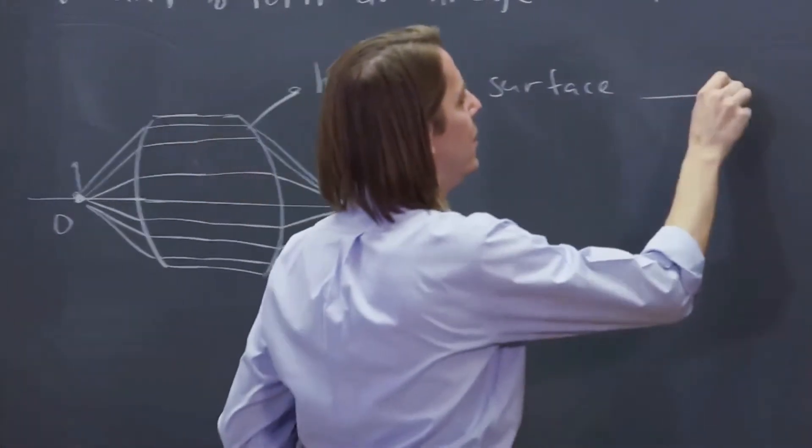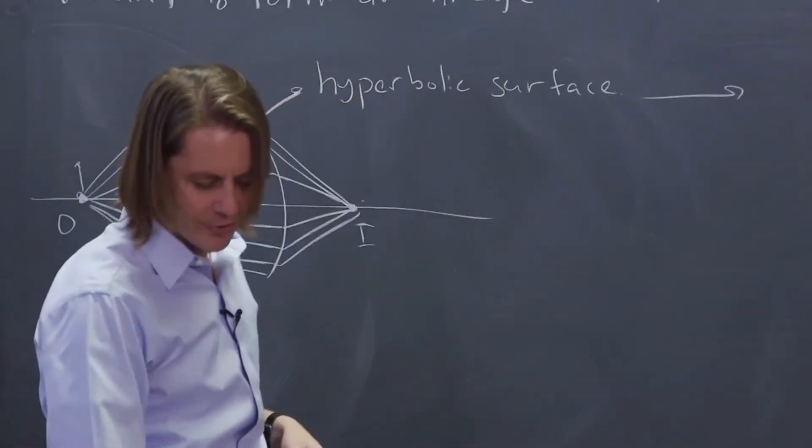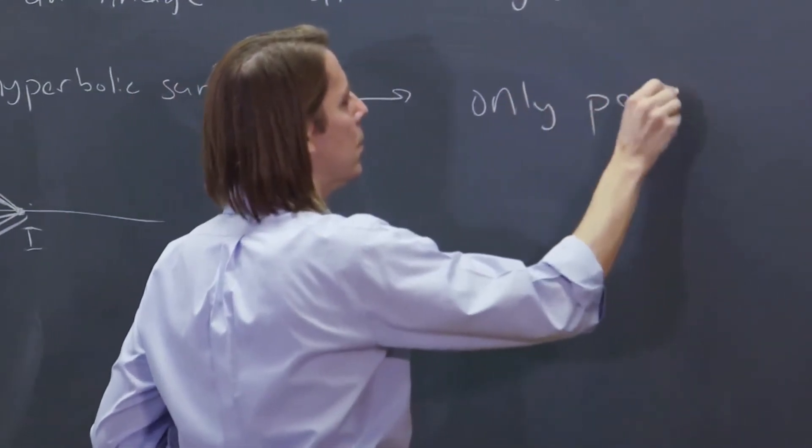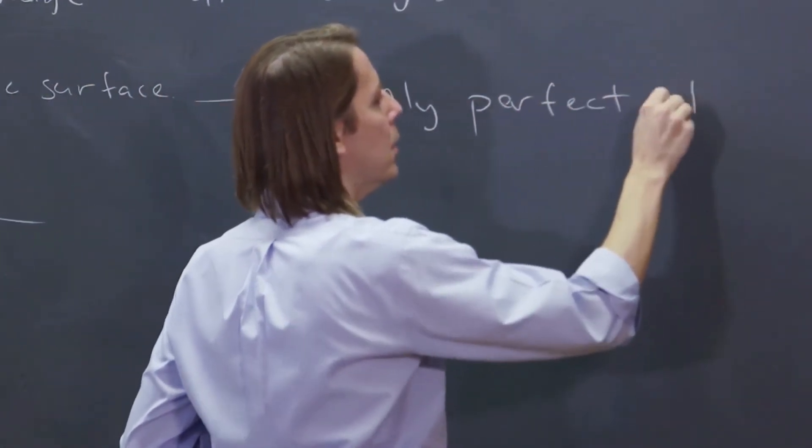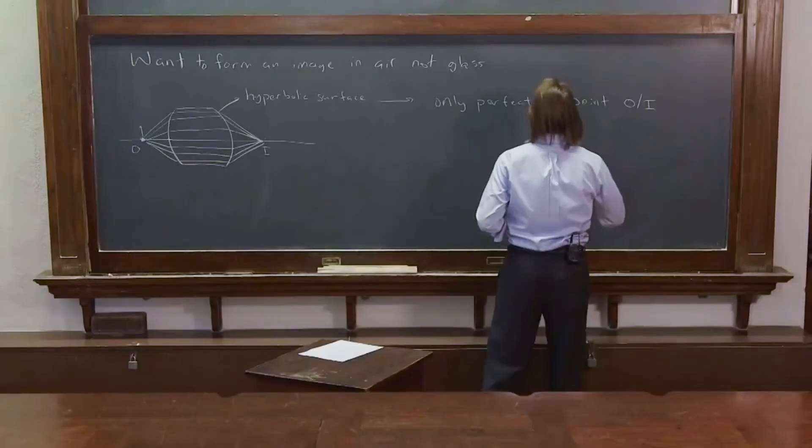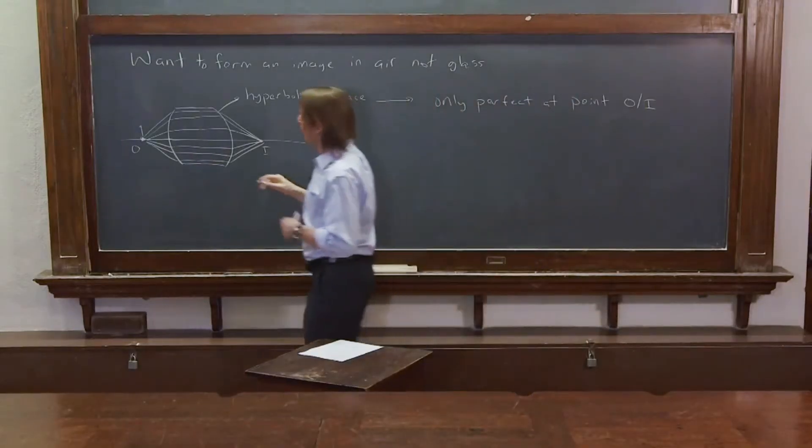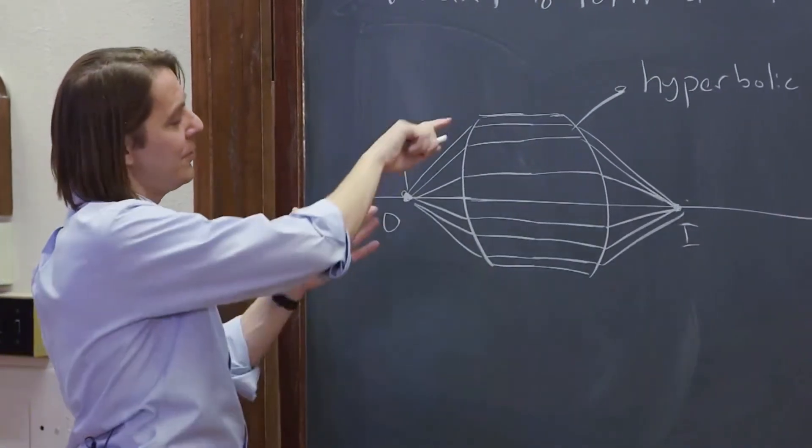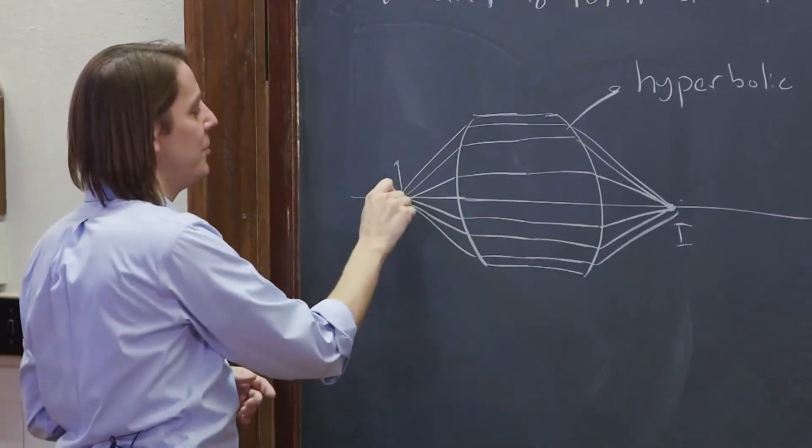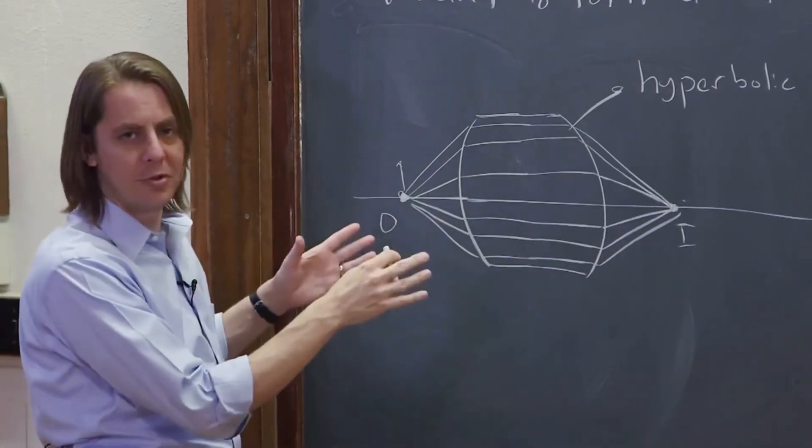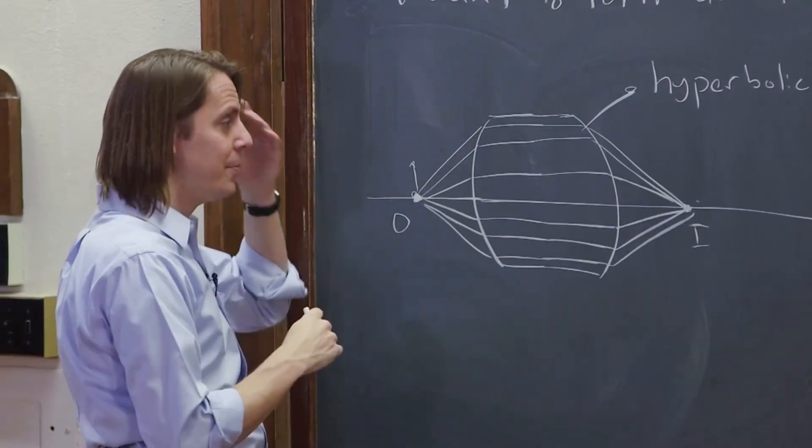there's a problem with a hyperbolic surface like this. It's only perfect at point OI. So if you work through the math of why it's a hyperbolic surface, which we're not going to do, what you'll find is the geometry that makes this happen is actually specific to this one point. Now, when you move away, it still kind of works. It's just not perfect. It's not a perfect imager.